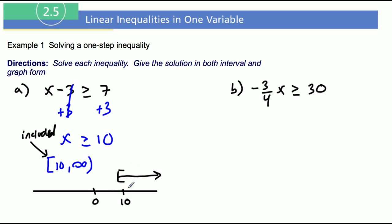What this is telling us on the graph is it starts at 10, that's why we have a bracket, and it goes on forever to the right. So those are the two ways that we wanted to see that.